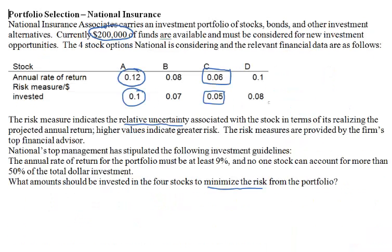In this problem, we want to minimize the risk. The rate of return for the entire investment must be at least 9%, and no one stock can receive more than 50% of the total amount invested, which should be $200,000.